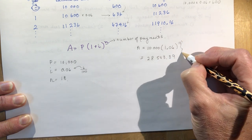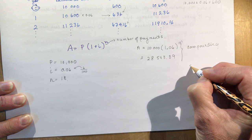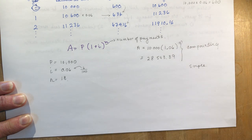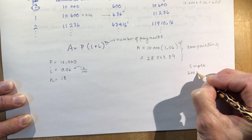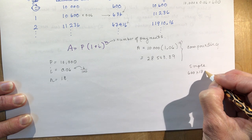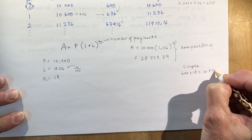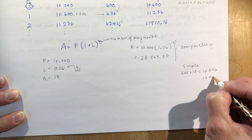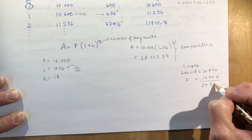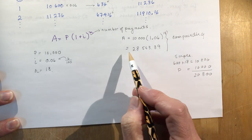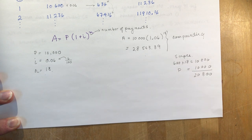So this is compounding — we're getting interest on the interest payments. If we had done simple interest, you would have received $600 times 18, which gives you $10,800, and you add your $10,000 principal to get $20,800. So you can see that with compounding interest you would make almost $8,000 more. That's the joy of compounding interest.